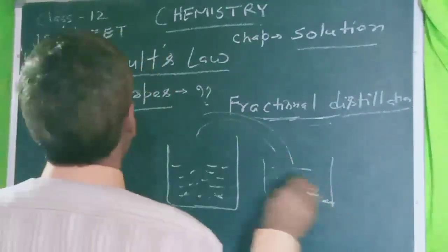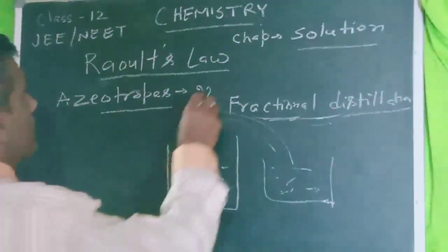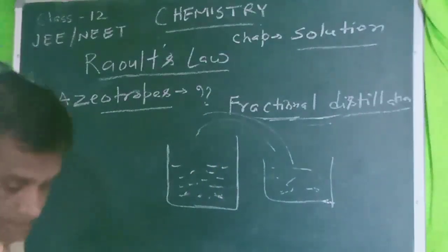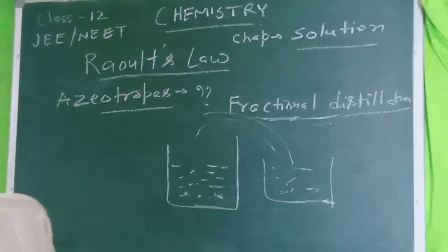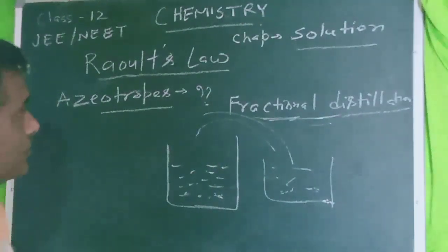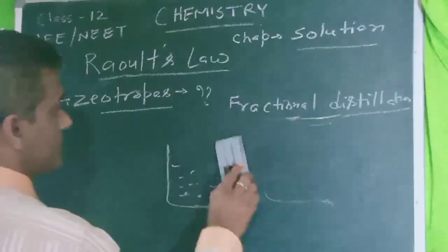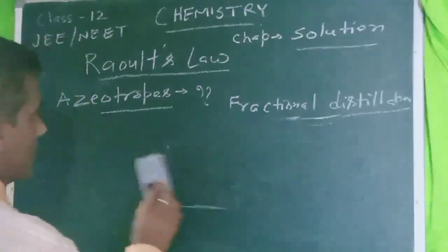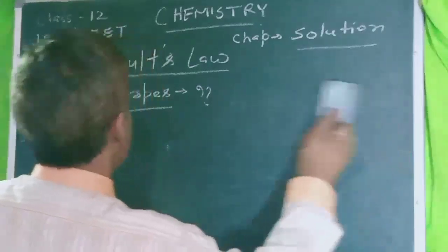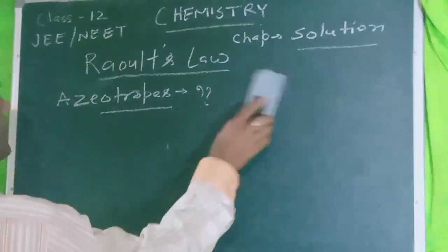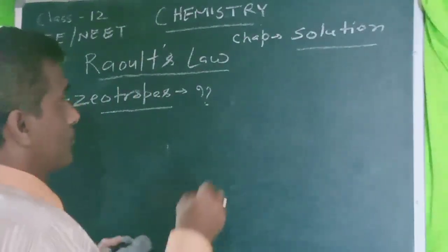So the azeotropic mixture is where fractional distillation is not possible. We have to discuss azeotropes in this context. If you need to understand Raoult's law, go to the previous link or the i-button suggested in the video.